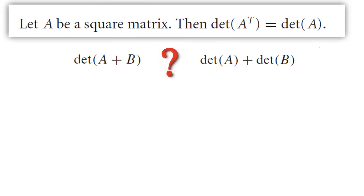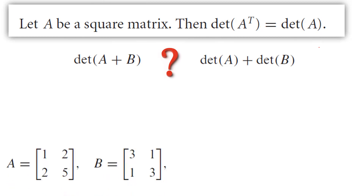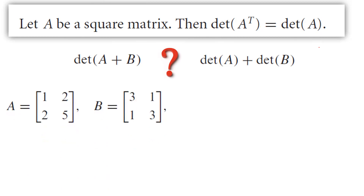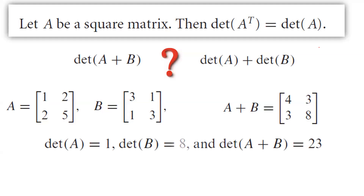I want you to remember this example. Consider A to be the matrix 1, 2, 2, 5, and matrix B to be 3, 1, 1, 3. If you add them together, you get the new matrix 4, 3, 3, 8.